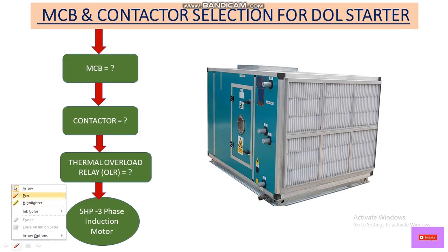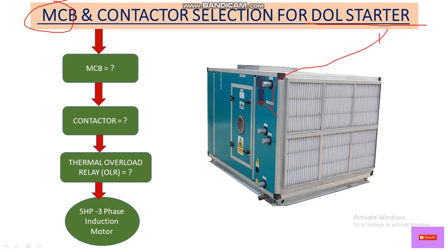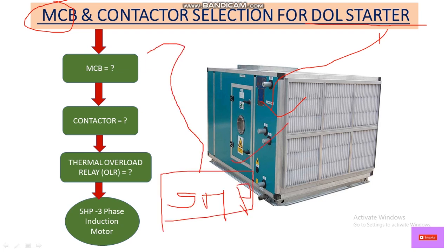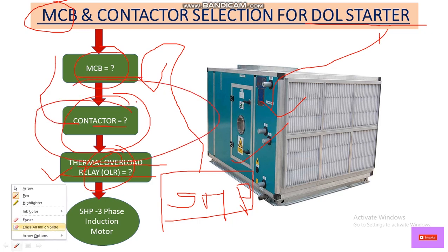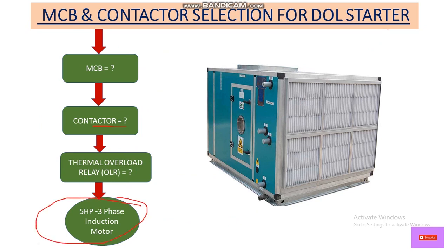So here we are going to calculate the size for contactor as well as MCB for DOL starter — direct online starter. For this AHU, which is an air handling unit, we have a 5 HP motor. For this unit, we are going to select the size of MCB and contactor. In the next video, we will discuss the selection and sizing of thermal overload relay. In this video, we only focus on MCB and contactor for the starter. This is the 5 HP induction motor inside this AHU, which is connected to a blower.